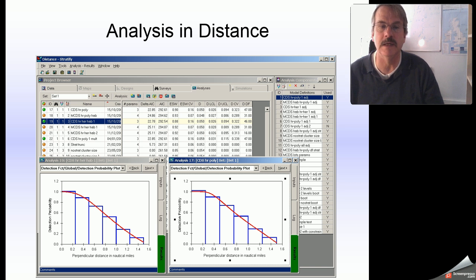Once the data have come into distance, you're able to perform analyses on those data by fitting detection functions and letting distance do the hard work of producing density and abundance estimates with associated measures of precision.